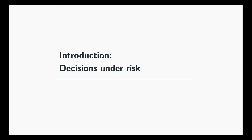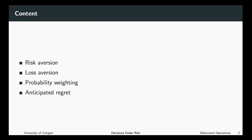Welcome to the next lecture. This lecture is about decisions under risk. We will talk about different concepts that allow us to incorporate different kinds of risk preferences and probability perceptions into analytical models — risk aversion, loss aversion, probability weighting, and anticipated regret. In contrast to biases and heuristics, these are concepts of preferences, not mistakes. A risk-averse subject has certain preferences which imply that he or she avoids risk.